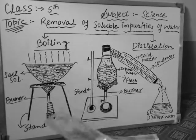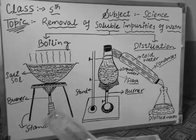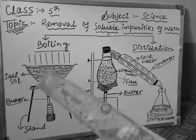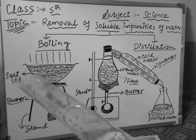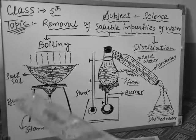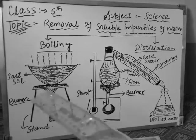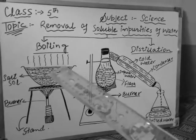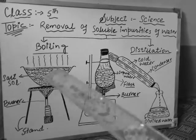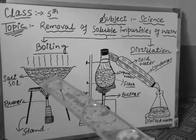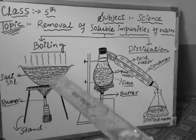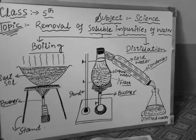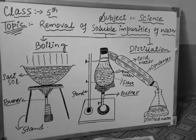Let me discuss the boiling process first. Here is the diagram. You can see a big container on a tripod stand, and a burner which will heat the container. In this container I have taken a salt solution — that is the impurity in water. This is not pure water; it contains salt or sugar. I have taken this example because the common salt we use at home is extracted from sea water.